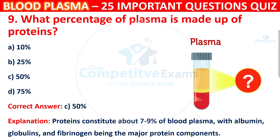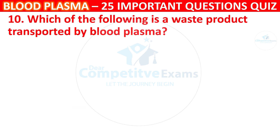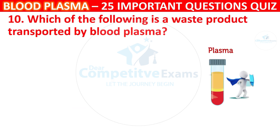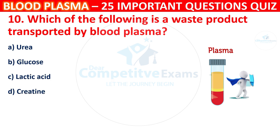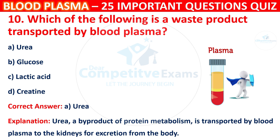Question 10: Which of the following is a waste product transported by Blood Plasma? Your options are Urea, Glucose, Lactic Acid, or Creatine. The correct answer is A, i.e. Urea. Urea, a by-product of protein metabolism, is transported by Blood Plasma to the kidneys for excretion from the body.